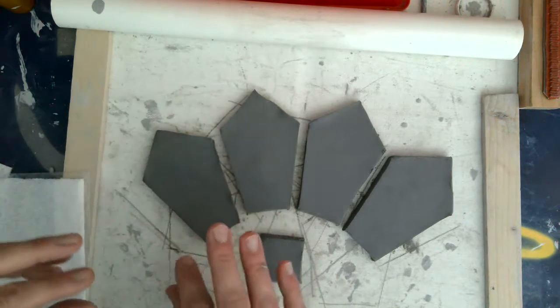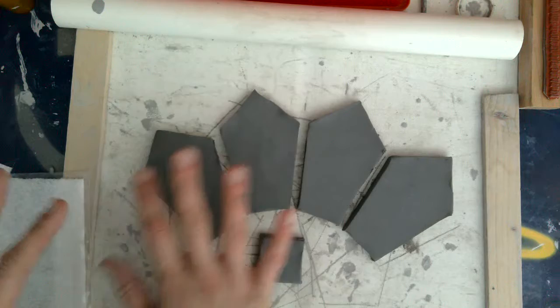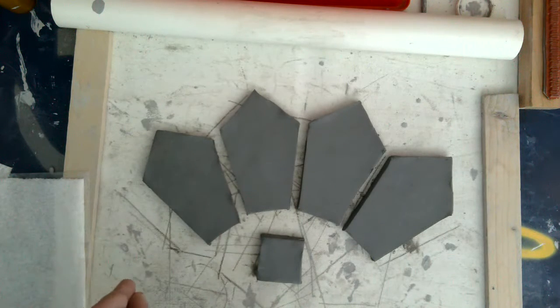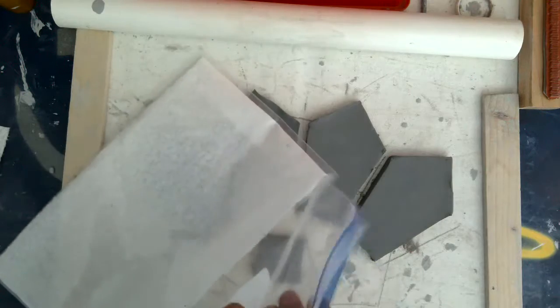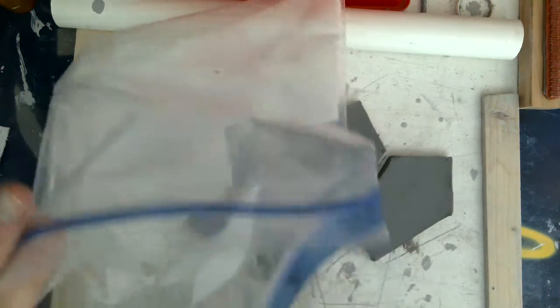So we need to actually store these overnight so that they start to get a little more firm. We don't want them all the way dry, so we're not going to leave them out because we would not be able to join them. They need to be firm enough that they're not going to be flopping all over the place, but moist enough that we can still score and slip and smooth them together.